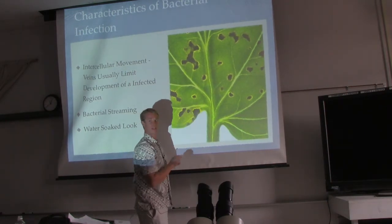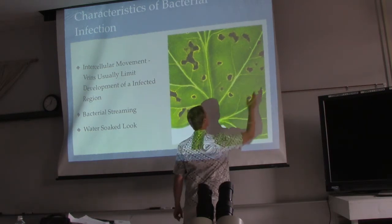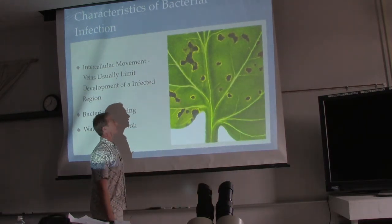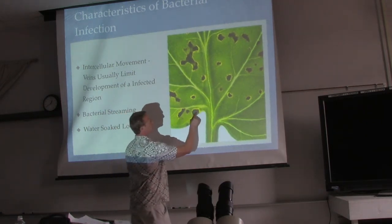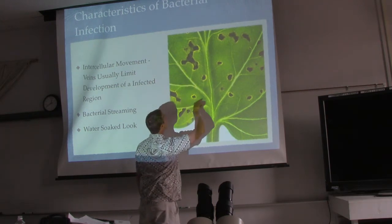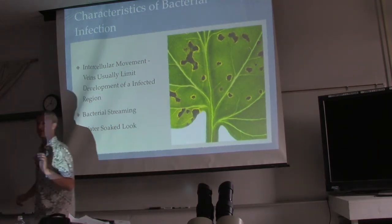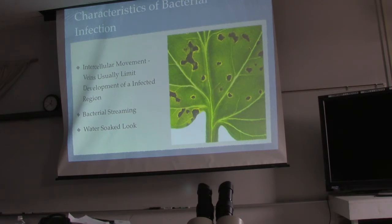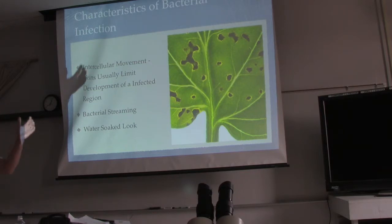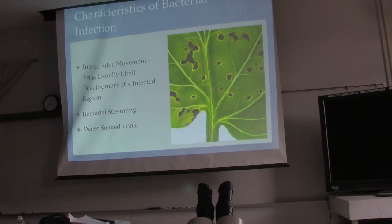Bacterial spots can look circular, similar to fungal spots. But if you look closely, you won't see any black spots crossing over the leaf veins. Leaf veins are stronger cell structures with higher lignin content, so bacteria can't break through that lignin — it has to travel along the softer cells of the leaf.